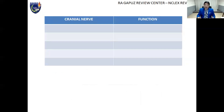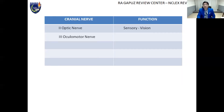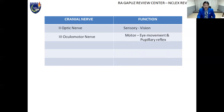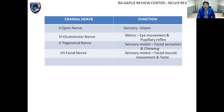Let's summarize: Cranial nerve 2, the optic nerve, is a sensory nerve responsible for vision. Cranial nerve 3, the oculomotor nerve, is a motor nerve responsible for eye movement and pupillary reflex. Cranial nerve 5, the trigeminal nerve, is a sensory-motor nerve responsible for facial sensation and chewing. Cranial nerve 7, the facial nerve, is a sensory-motor nerve responsible for facial muscle movement and sense of taste. Cranial nerve 12, the hypoglosal nerve, is a motor nerve responsible for tongue movement.